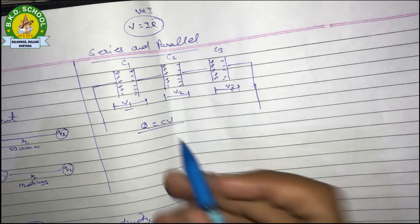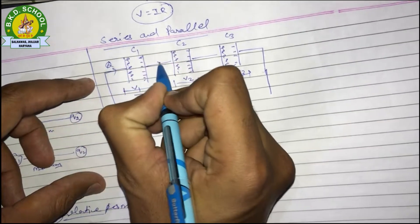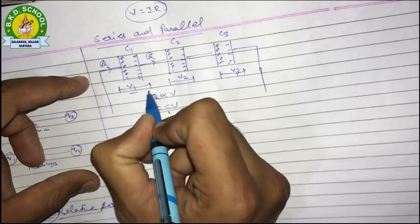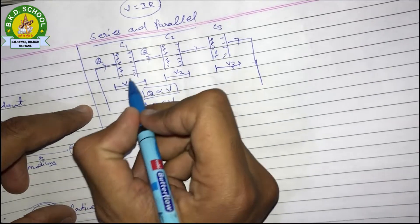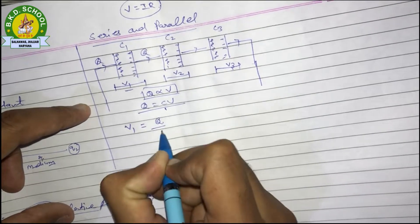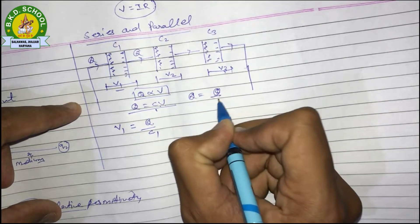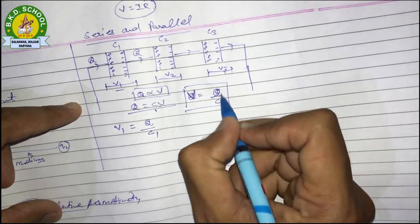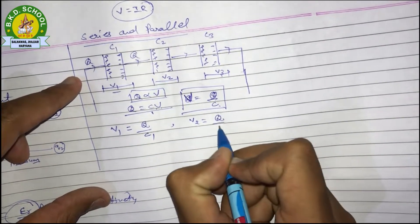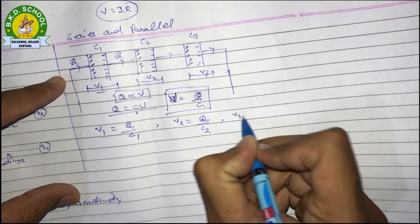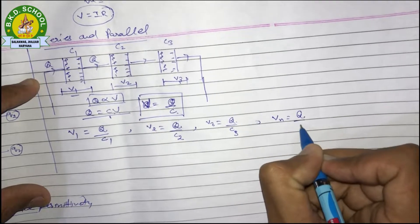We learned that the more charge you give to a capacitor, the more its potential increases. The procedure is the same as for resistance. What changes here is Q and V — V is directly proportional to Q. The value of V is Q divided by C. So V1 = Q/C1, V2 = Q/C2, V3 = Q/C3, and for n terms, Vn = Q/Cn.